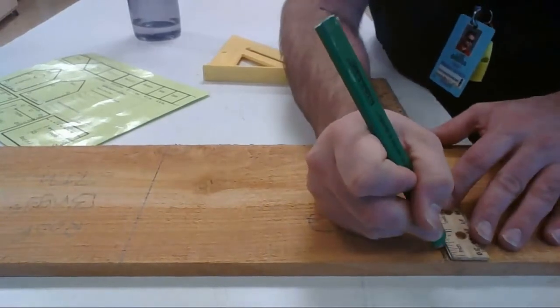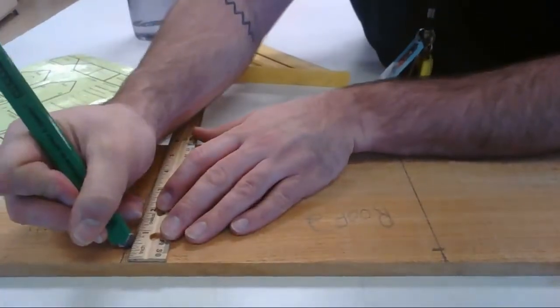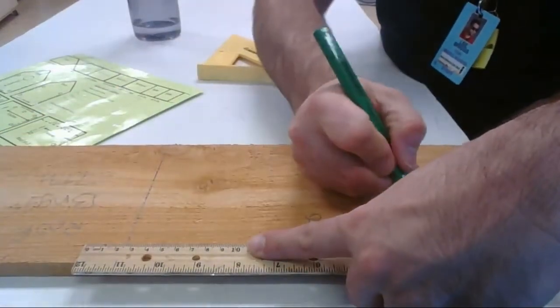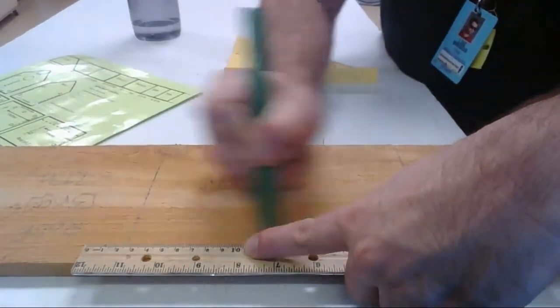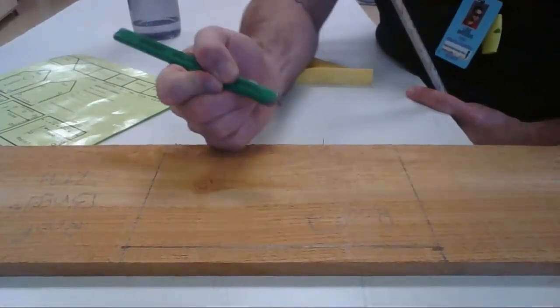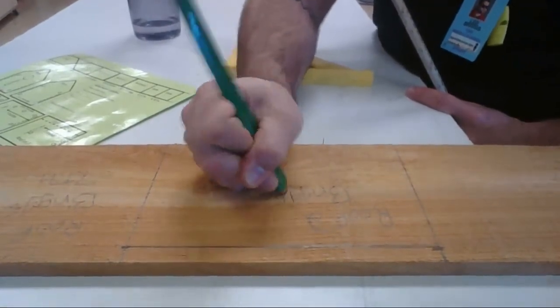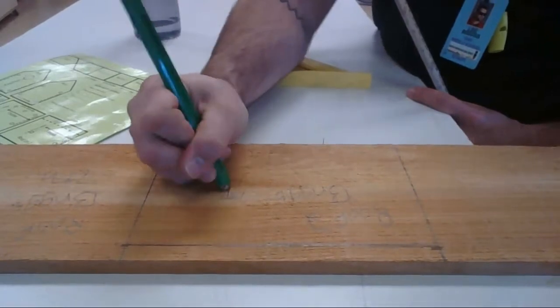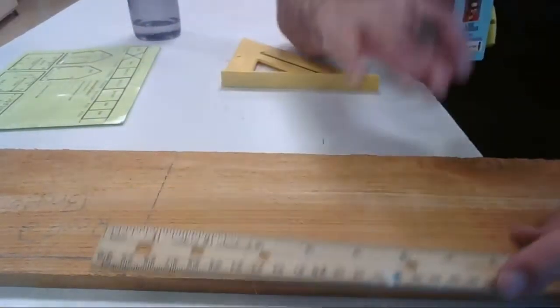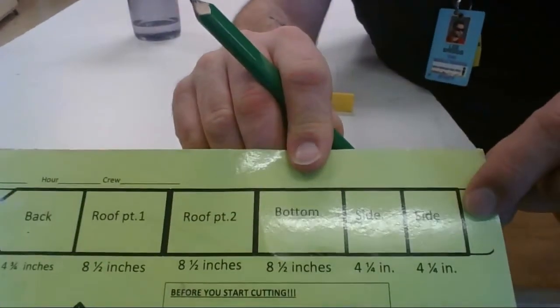I'm going to mark half an inch from the edge right here and I'm going to mark half an inch from the edge right there. Using my ruler or another straight edge, I'm gonna mark that half inch that I am going to cut off of my roof part two. I'm gonna label all my pieces here, make sure my name is on it and the hour.